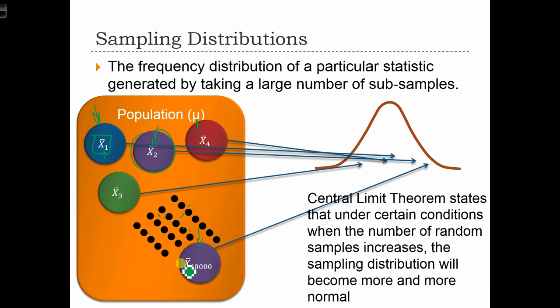If we take all of our x bars from all of these samples that we took and create a frequency distribution from those sample means, that distribution that we get is called the sampling distribution.